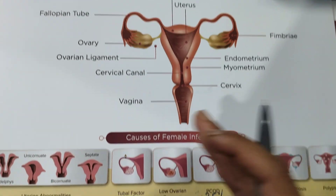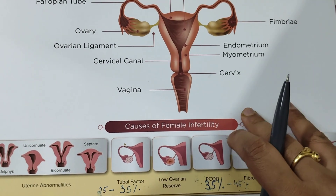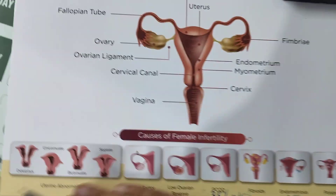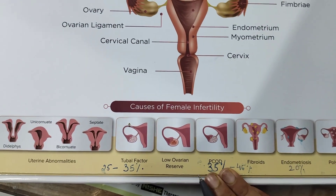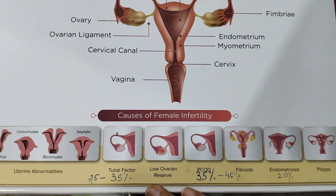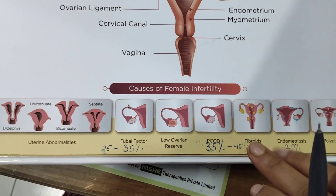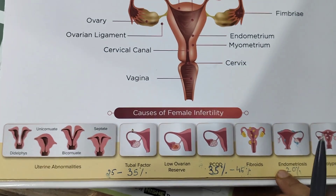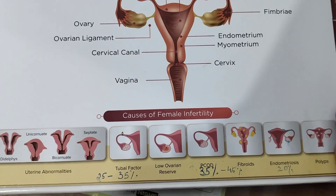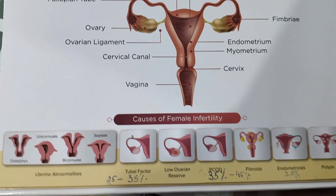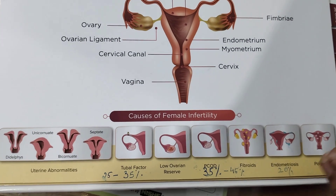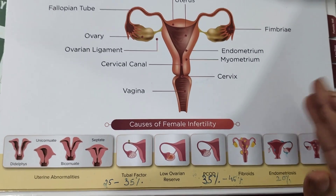Poor male parameters combined with severe female infertility causes will obviously result in poor prognosis only. One very important point is that multiple causes can co-exist — for example, a patient can have PCOD with a septate uterus, tubal factor with endometriosis, or low ovarian reserve with polyps or fibroids. Female and male infertility causes can also co-exist. So every cause has to be tackled individually, and it is very crucial to properly diagnose the cause of infertility in an infertile couple. A simple good diagnosis itself can help couples conceive naturally or by IUI.